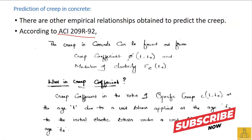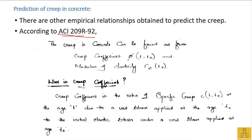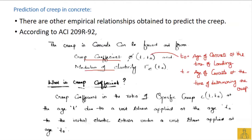We have certain relationships given, and we are going to look into one of them: the American Standard ACI 209 R-92. This empirical relationship helps us predict the creep using two parameters: the coefficient φ and the modulus of elasticity Ec. Here, t-naught is the age of concrete at the time of loading, and t is the age of concrete at the time of determining the creep.